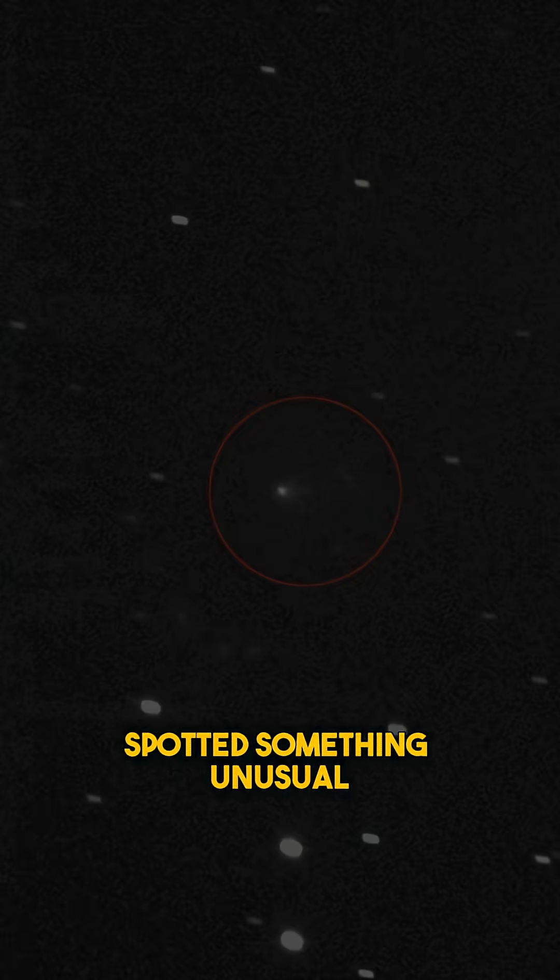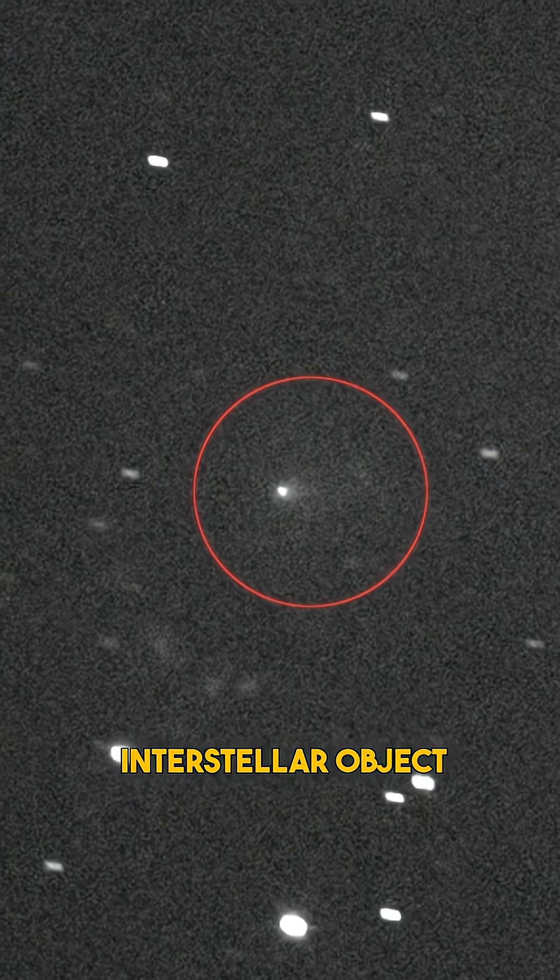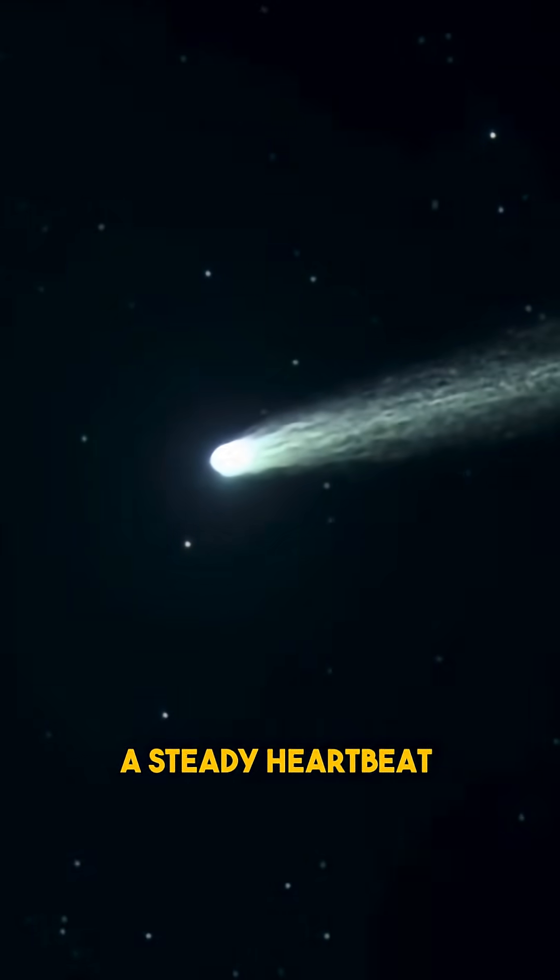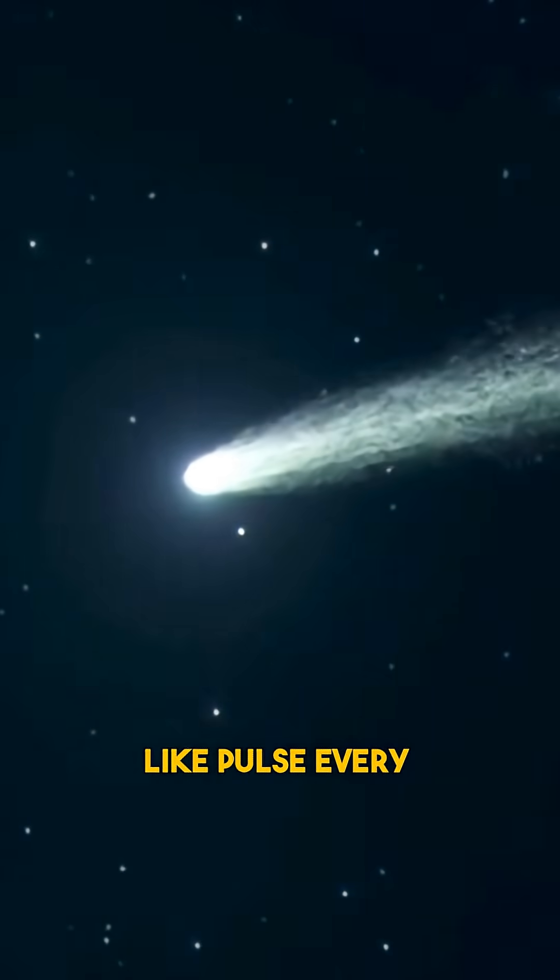Astronomers have just spotted something unusual coming from the interstellar object 3i Atlas, a steady heartbeat-like pulse every 16.16 hours.